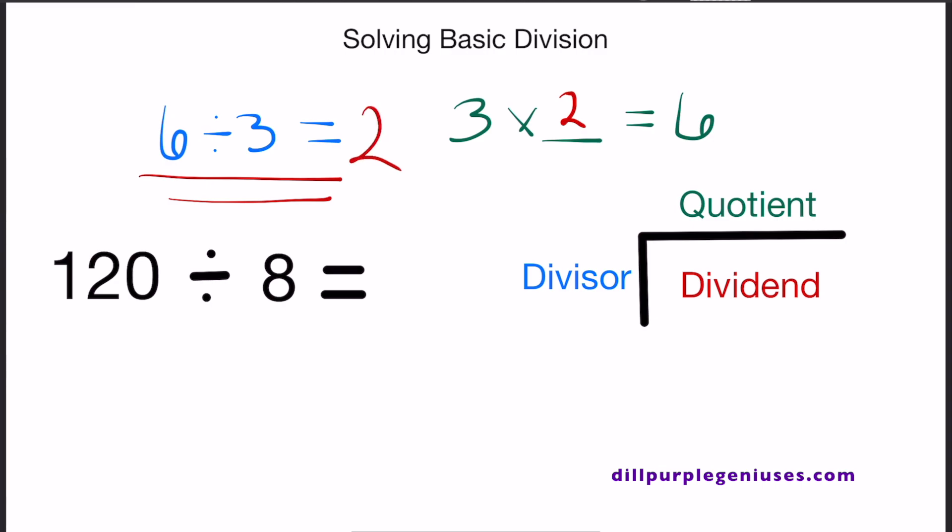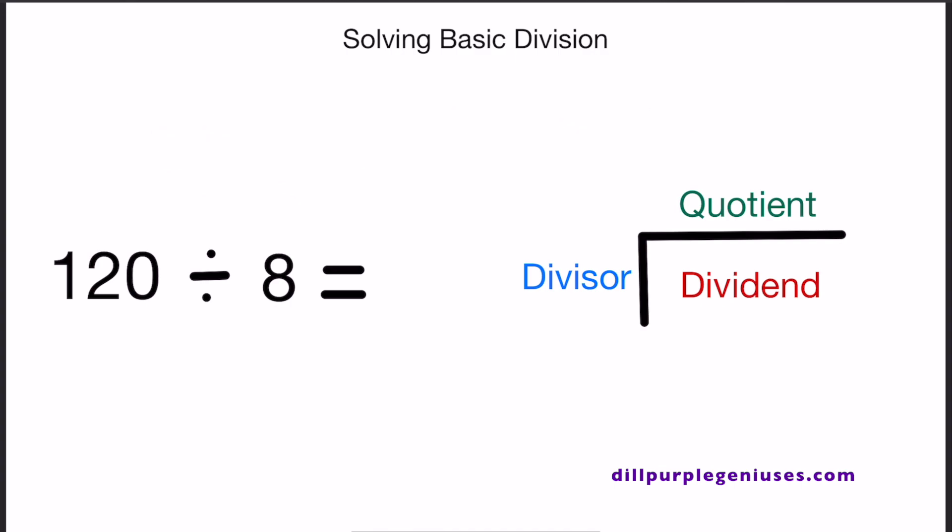But what happens when you're given an equation that's more complex? Let's say you're given 120 divided by 8. It may take you a second to think about how many times 8 goes into 120. It is best to solve these problems through basic division.